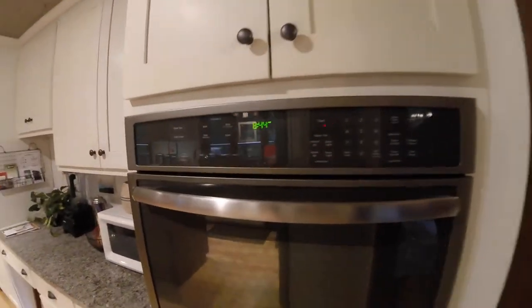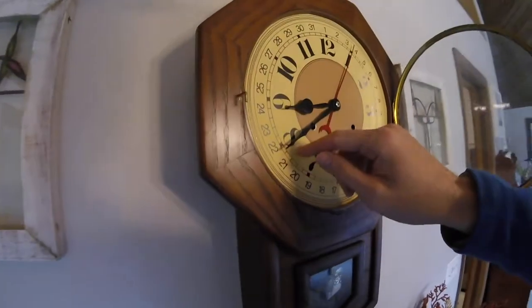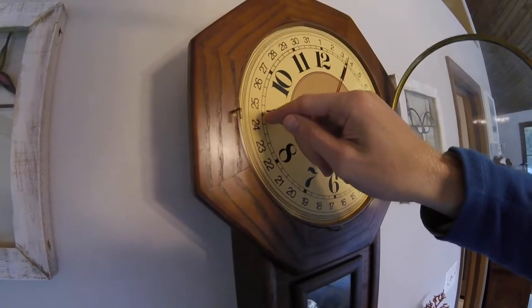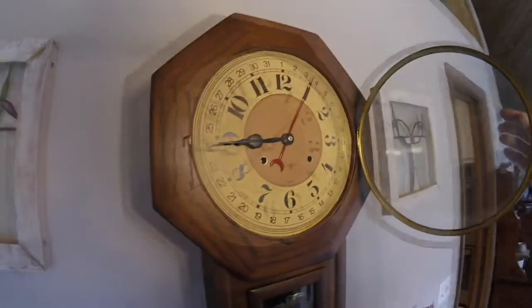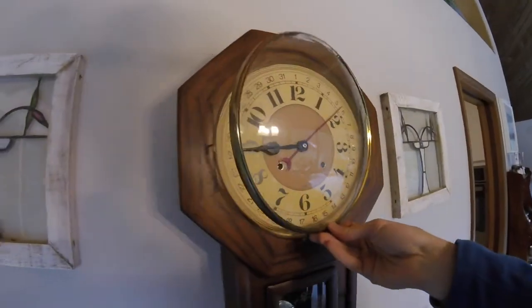First we adjust the clock to the correct time. Then we twist the small nut located on the bottom of the pendulum. Twist it to the right to make the clock tick faster. Twist the nut to the left to make it go slower. Usually a very small adjustment is all that is necessary.